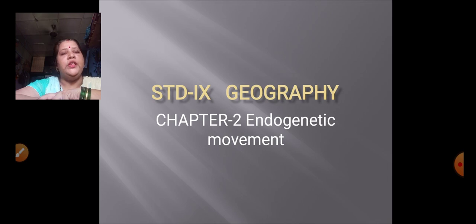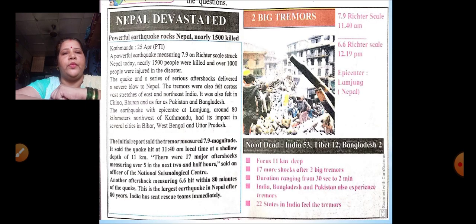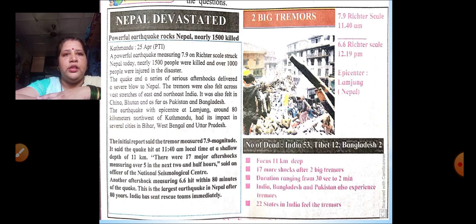Before we start with the endogenetic movement, I will show you one newspaper snippet. In this newspaper snippet, one article is given to you regarding Nepal Devastator. You will have to read this article and answer some of my questions. I will read it for you.